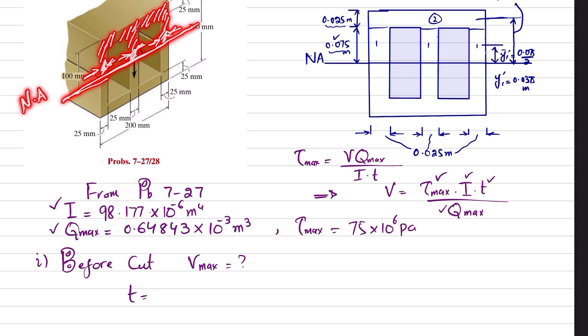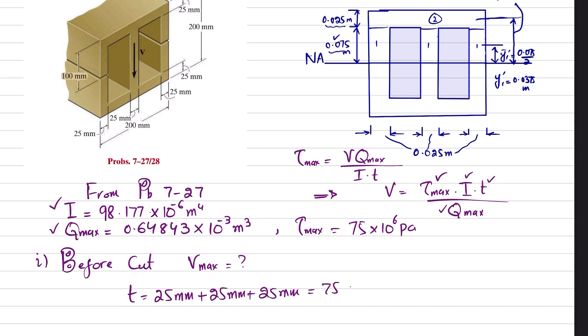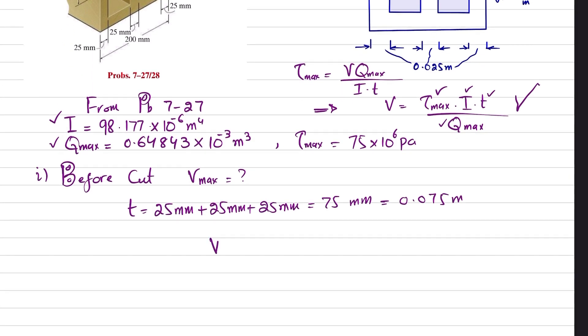So this thickness will be equal to three times 25 millimeters—25 mm plus 25 mm plus 25 mm, or 3 × 25 mm, that is 75 millimeters, and that equals 0.075 meters. Now you can just put it in this formula.